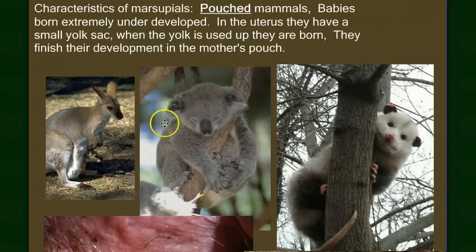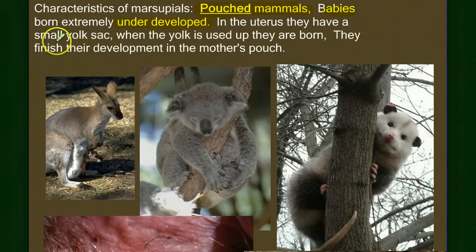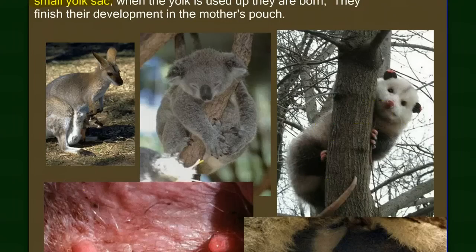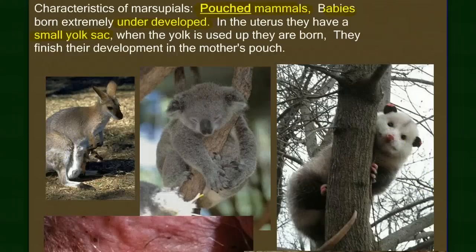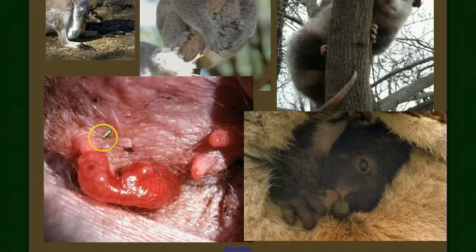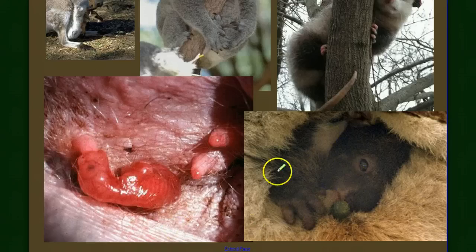The marsupials are our pouched mammals. When their babies are born, they're born extremely underdeveloped — almost premature — because they have a small yolk sac and no large nutrient reserve. When the yolk sac is used up, they're born and finish their development in their mother's pouch. Examples include kangaroos, koalas, and possums. The key is that when born, they're premature; they climb up into the pouch, attach to the teat, suckle, and finish their development there.